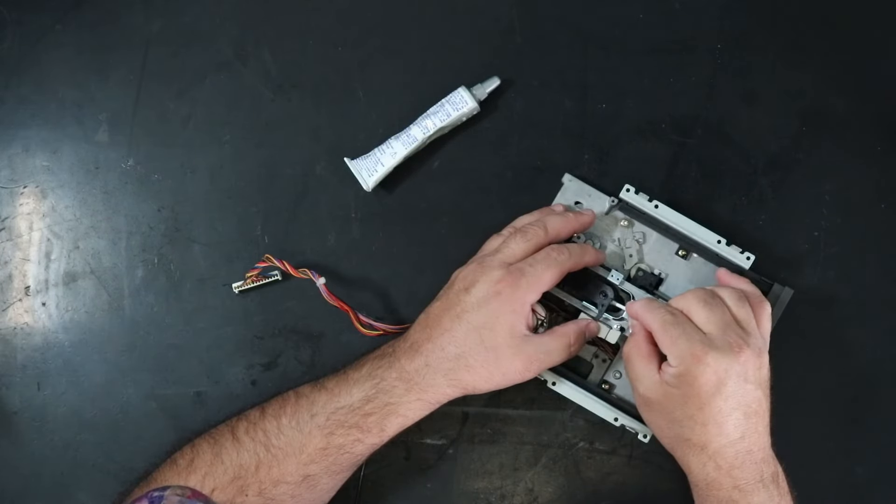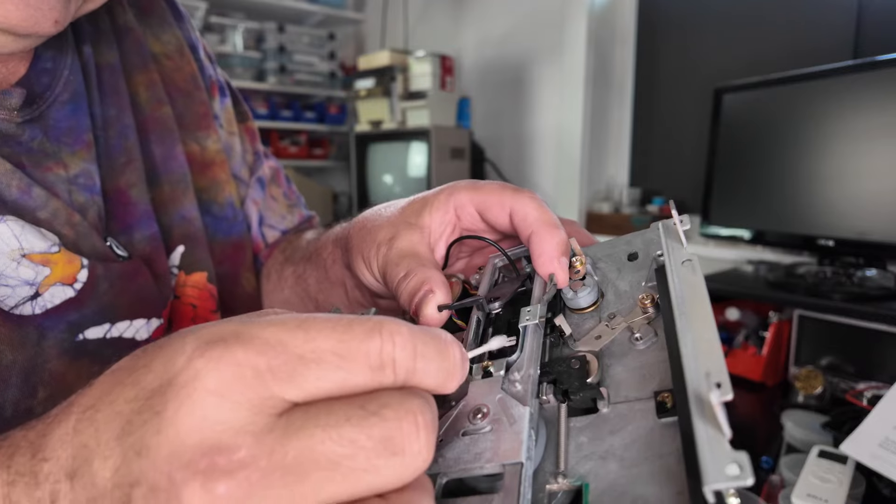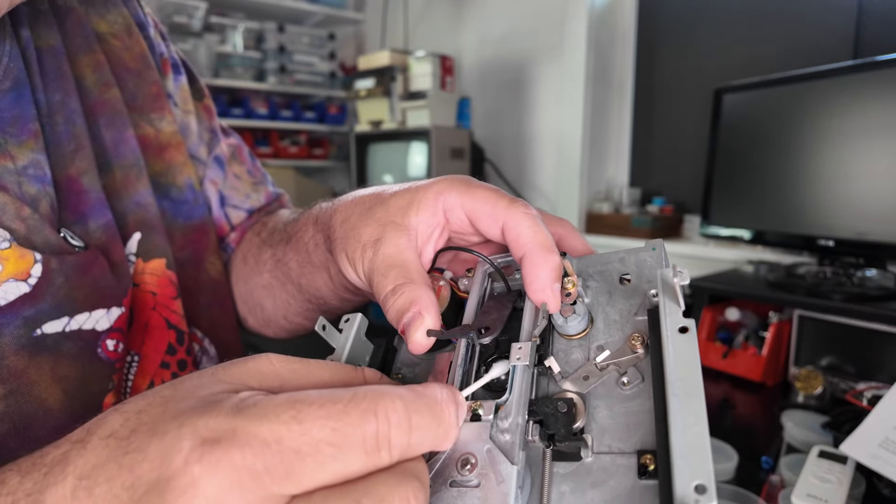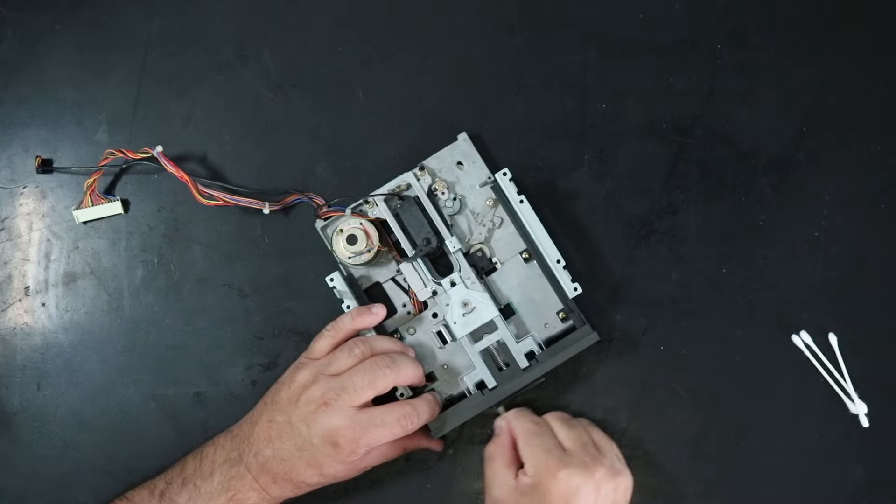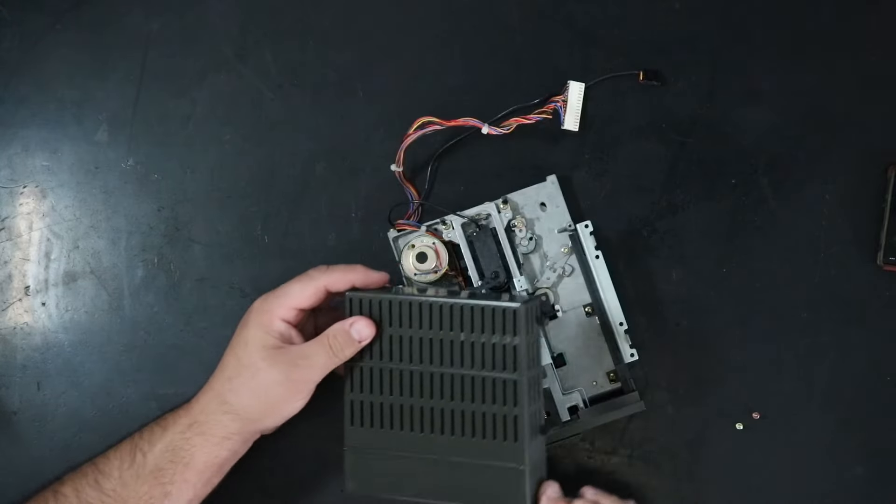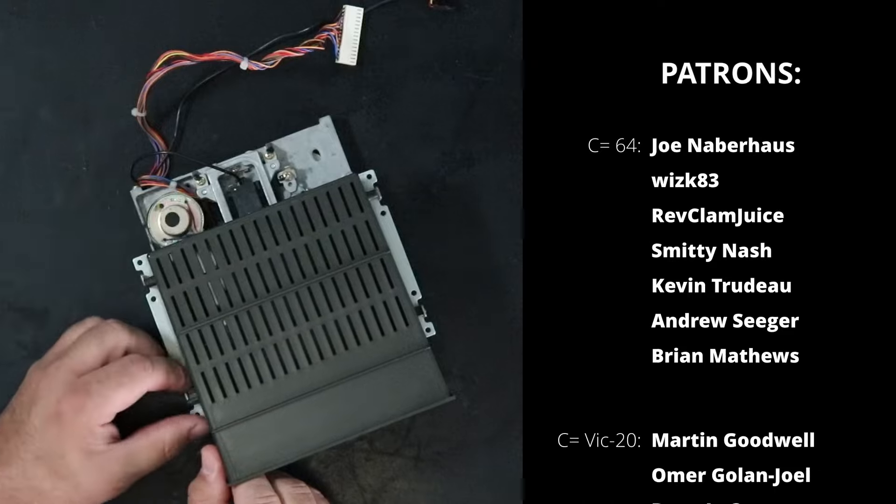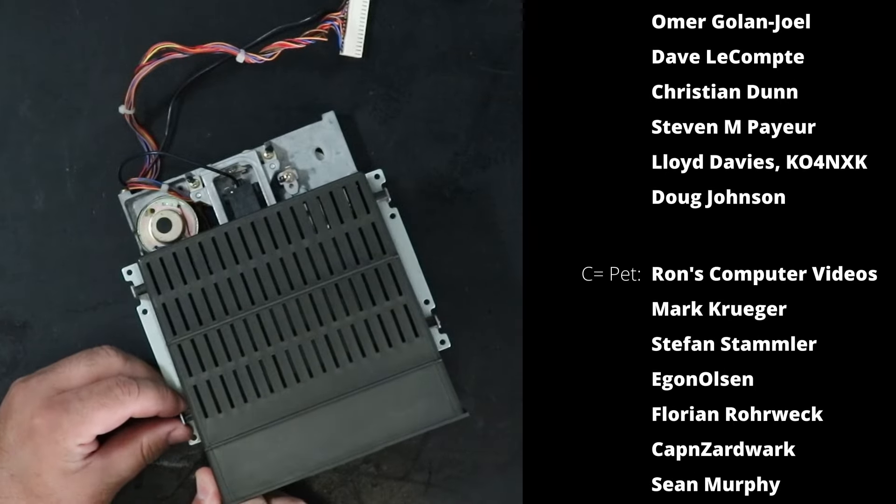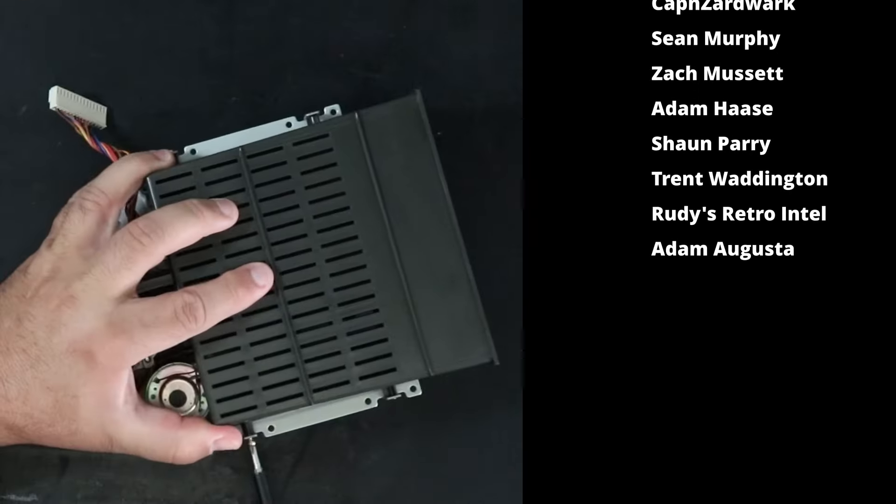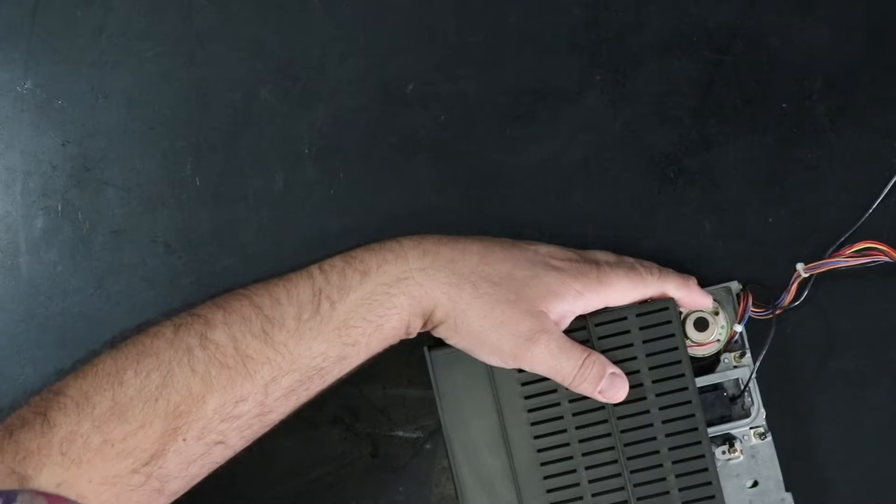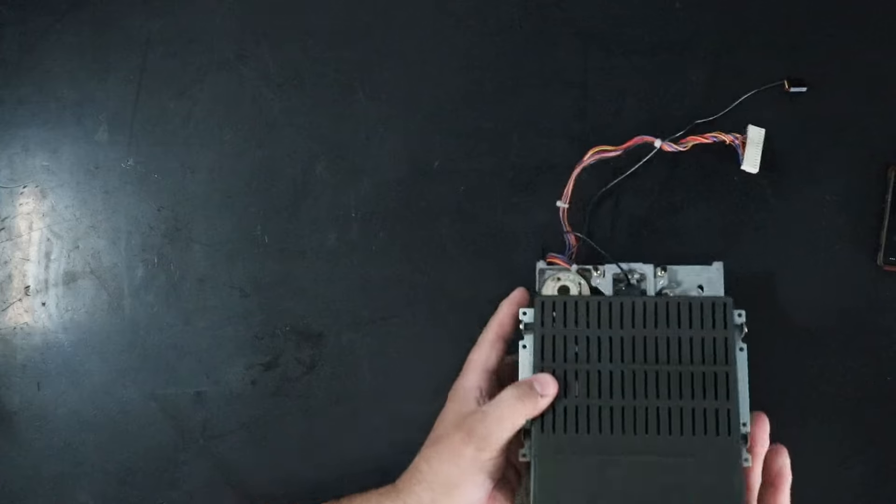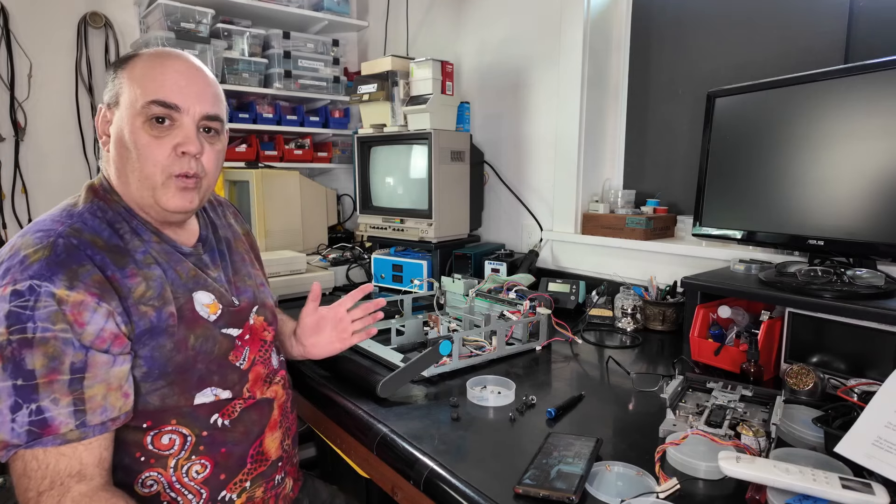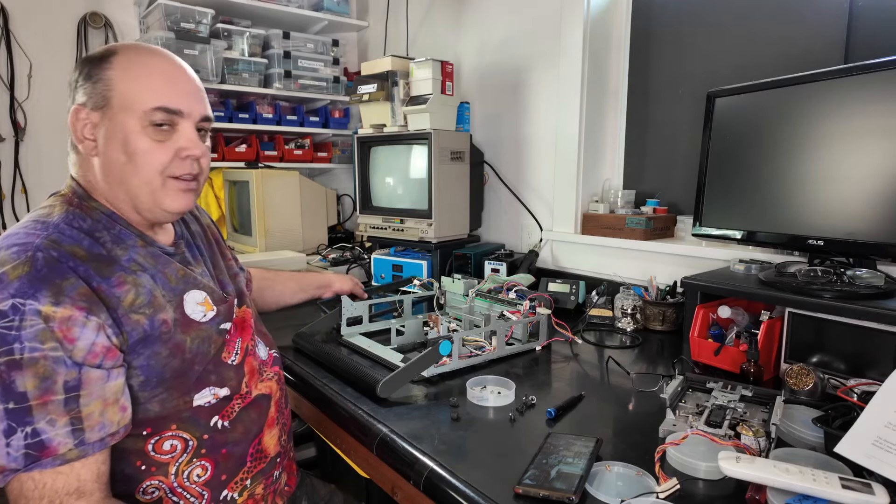And so all right we just need to clean up the heads with alcohol on a q-tip and return the storage bin to where it goes. All right so that is ready to go back into the frame.